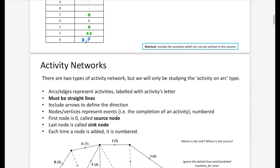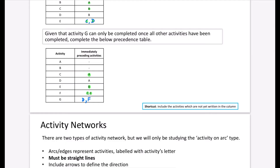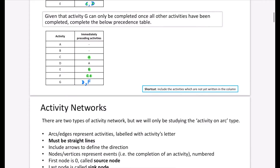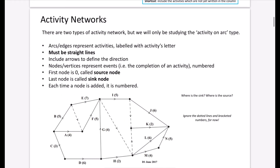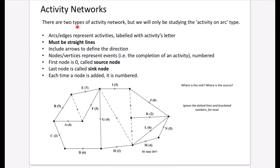Now we'll look at activity networks — a way of taking a precedence table and representing it visually. There are two types of activity network, but we only study the activity on arc type, where the arcs or edges represent the activity and are labeled with the activity's letter. In this example, each arc represents an activity: A, B, C, and so on.